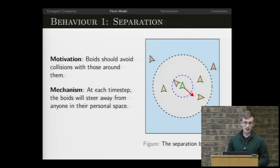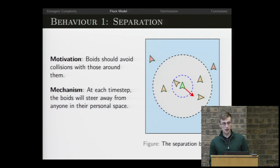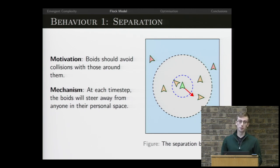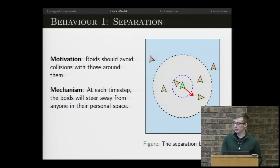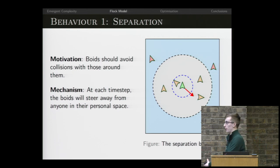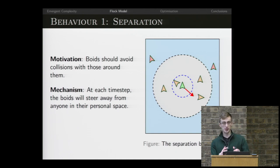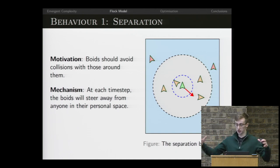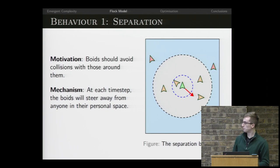The first behavior is separation, which is really obvious. Birds in real life can't fly through each other, nor do they often hit each other, because that's expensive from an evolutionary point of view. So each bird will try to fly away from any birds that are very close to it within a smaller sub-sphere.